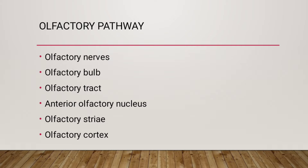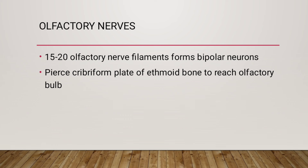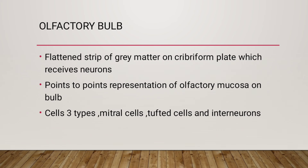The olfactory nerves consist of 15 to 20 olfactory nerve filaments forming bipolar neurons that pierce the cribriform plate of the ethmoid bone to reach the olfactory bulb. The olfactory bulb is a flattened strip of gray matter on the cribriform plate which receives neurons in a point-to-point representation of the olfactory mucosa.